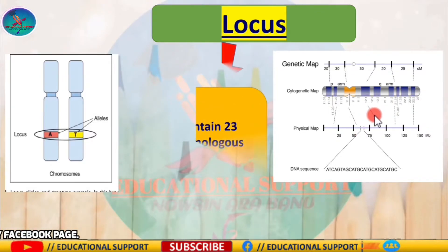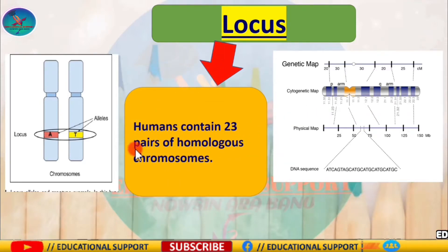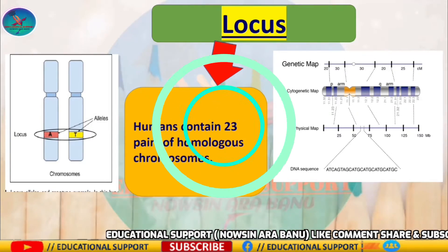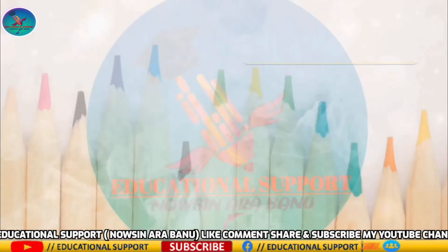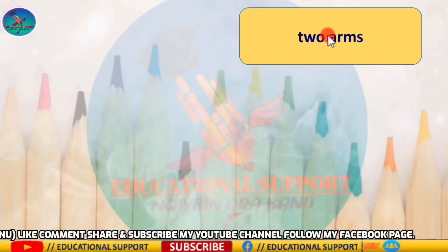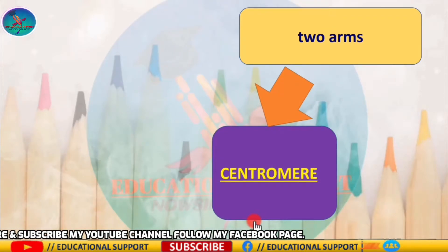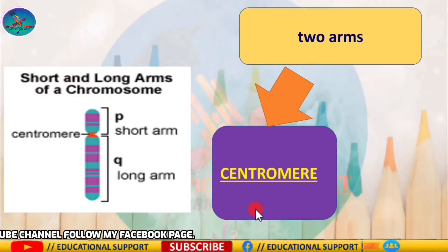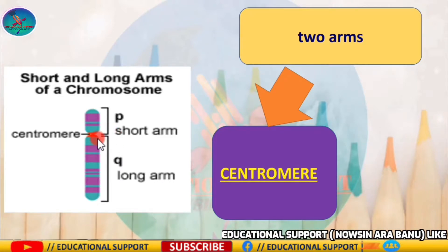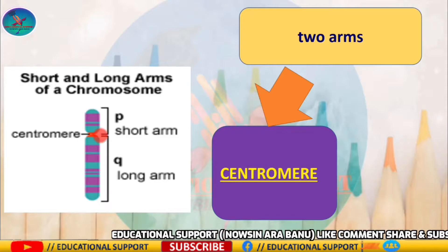Humans contain 23 pairs of homologous chromosomes and each homologous chromosome contains the same genes at the same locus. Most chromosomes consist of two arms connected by the centromere. The long arm of the centromere is called the Q arm and the short arm is called the P arm. G-banding is the technique used to stain the condensed regions of the centromere.